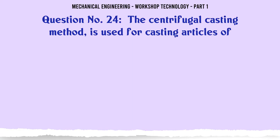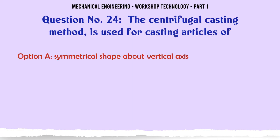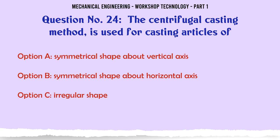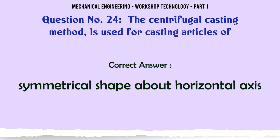The centrifugal casting method is used for casting articles of: A. Symmetrical shape about vertical axis. B. Symmetrical shape about horizontal axis. C. Irregular shape. D. Non-ferrous metal only. The correct answer is: Symmetrical shape about horizontal axis.